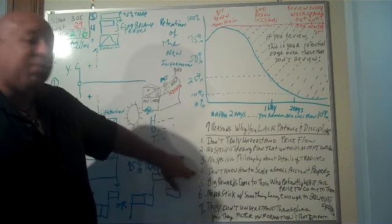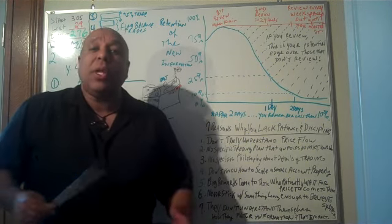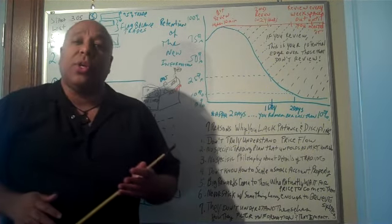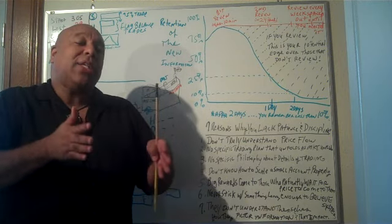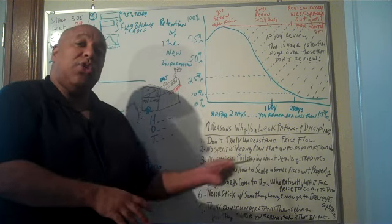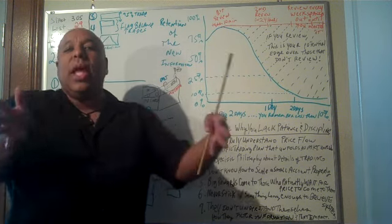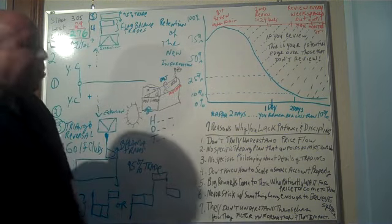The fourth reason that people don't have patience or discipline is because they don't know how to scale a small account to get it to become larger. What happens is you've got to deal with the discipline of you're actually better as a trader than what your account is showing. So you've got to deal with that mental gap and patience internally so that you can get there.